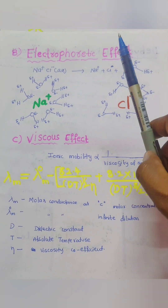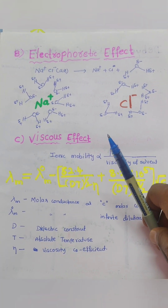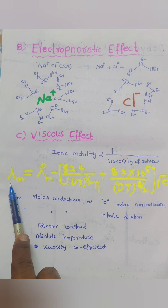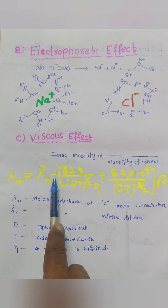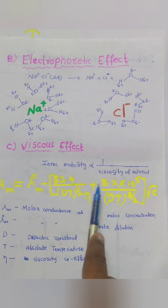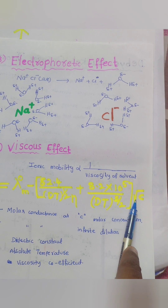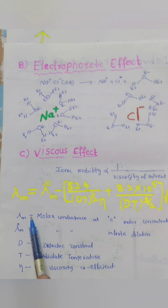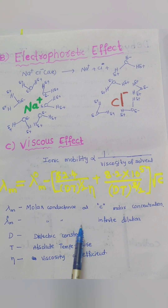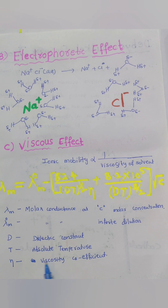By considering all these effects — the asymmetric effect, the electrophoretic effect, and the viscous effect — Debye, Hückel, and Onsager proposed a new equation to calculate the molar conductivity of strong electrolytes. The equation is: lambda M = lambda⁰ M − [82.4 / (D·T)^(1/2) · η + 8.2×10⁵ / (D·T)^(3/2)] × √C. Here, lambda M is the molar conductance at a given concentration C, lambda⁰ M is the molar conductance at infinite dilution, D is the dielectric constant, T is the absolute temperature, and η is the viscosity coefficient.